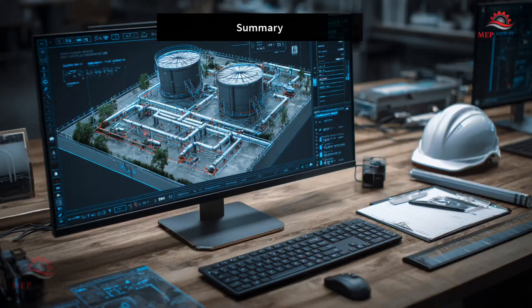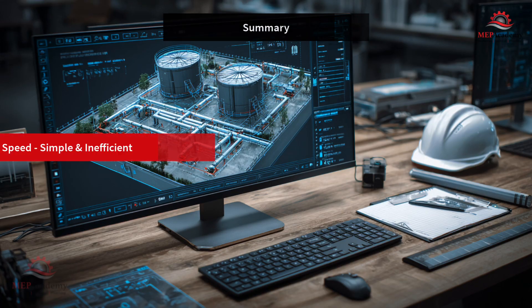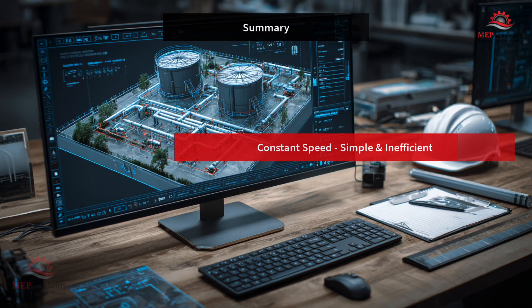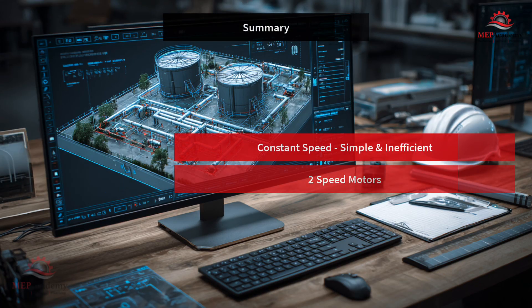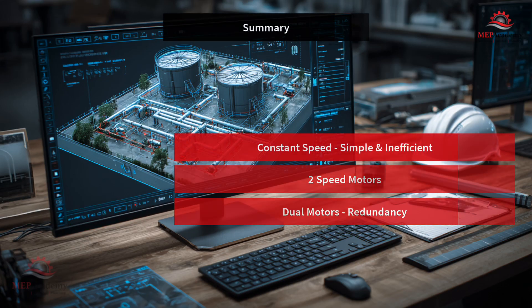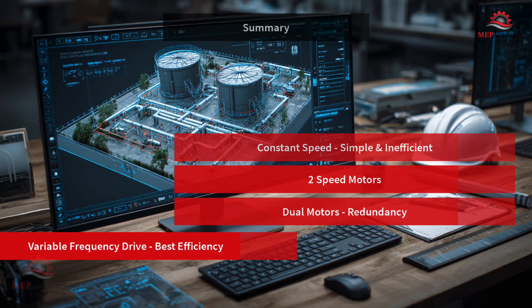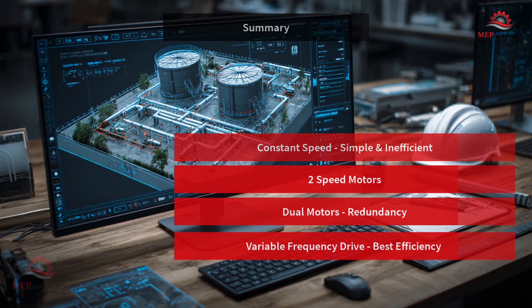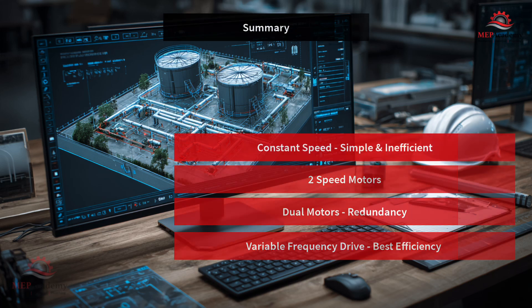To recap: constant speed is simple but inefficient. Two-speed motors add a low setting, but still stepwise. Dual motors provide redundancy and staging flexibility. And VFDs, while slightly more expensive, offer the best efficiency, control, and reliability. Combine VFDs with smart sequencing across multiple cells and you'll unlock major energy savings in your plant.